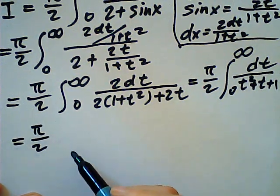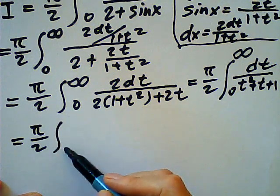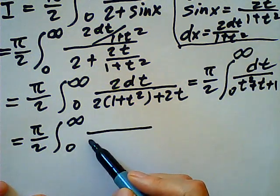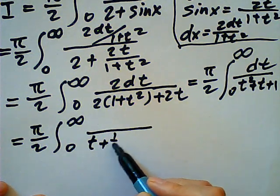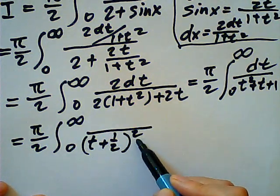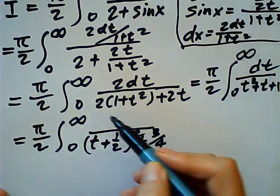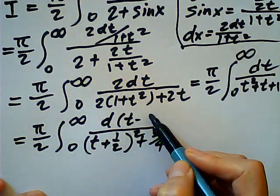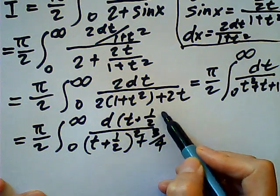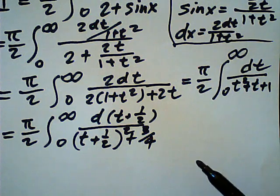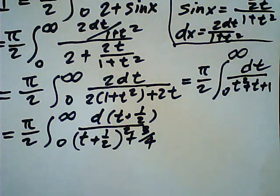So this is a half. Completing square t plus half square plus three fourths. These are all very basic stuff. Then we use the formula.